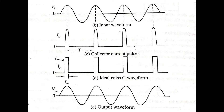If the input waveform is a complete sine wave — which you can see here — and it is to be amplified in Class C operation, then the collector current will flow for less than half cycle. The ideal Class C waveform shows the collector current as a narrow pulse. This pulse energizes the LC tank circuit in the collector region, and the tank circuit then produces oscillations at the output.